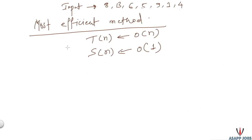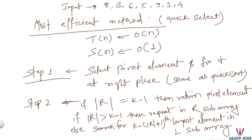Now let's see the most efficient solution of this problem, where we can solve this in linear time. This method we call the Quick Select method, which came from the QuickSort mechanism. As we do in QuickSort, first we decide a pivot element, then bring all elements greater than the pivot to the right and all smaller elements to the left. After this step, the pivot element is at its correct position in the input sequence.